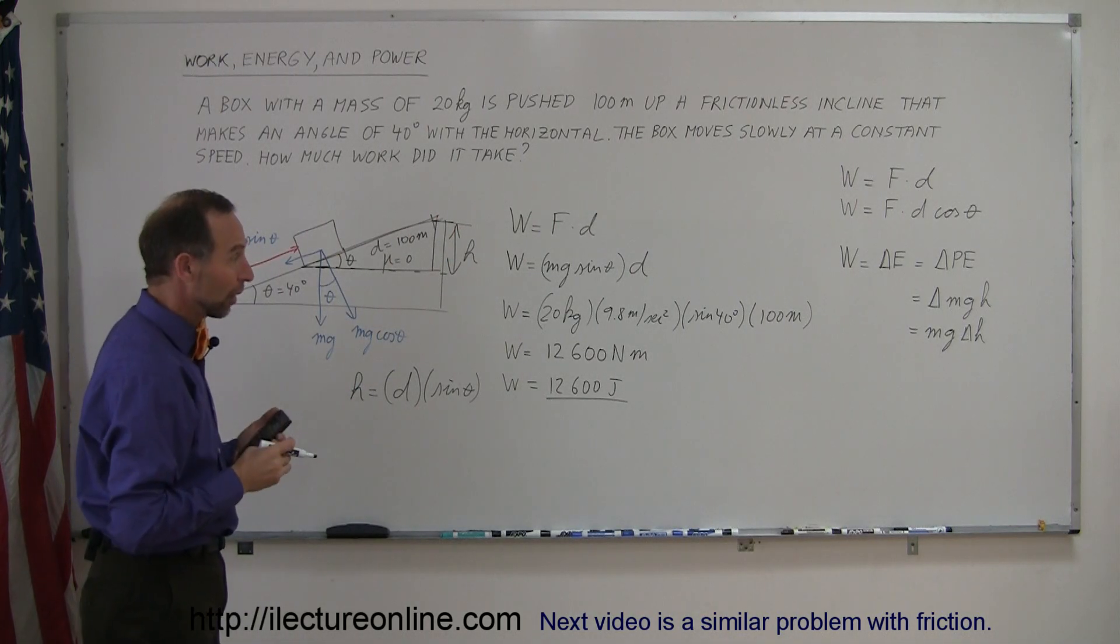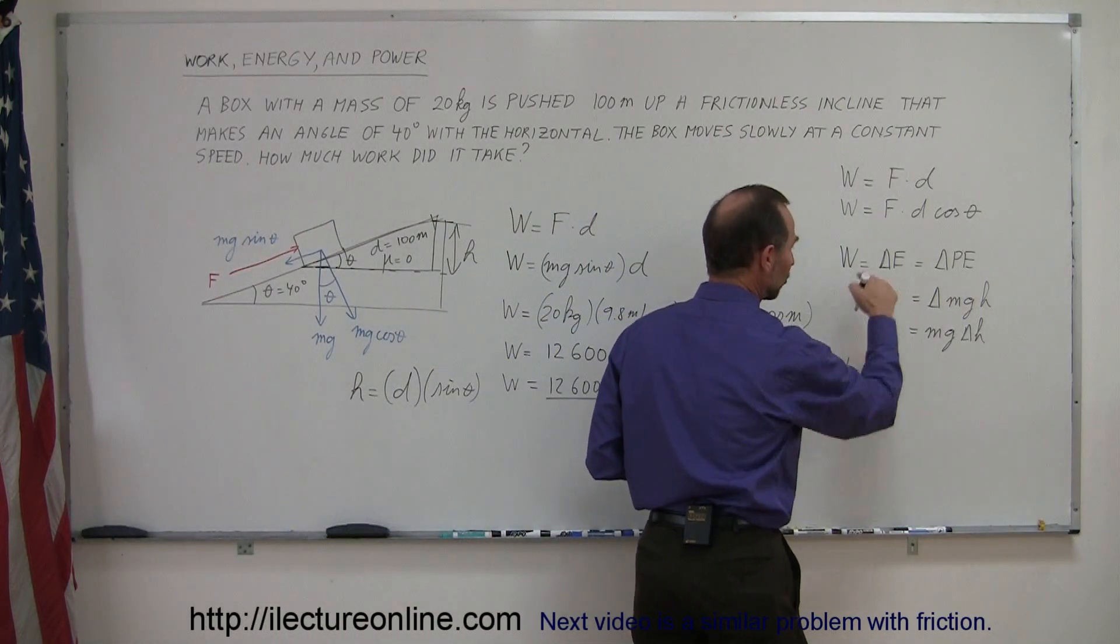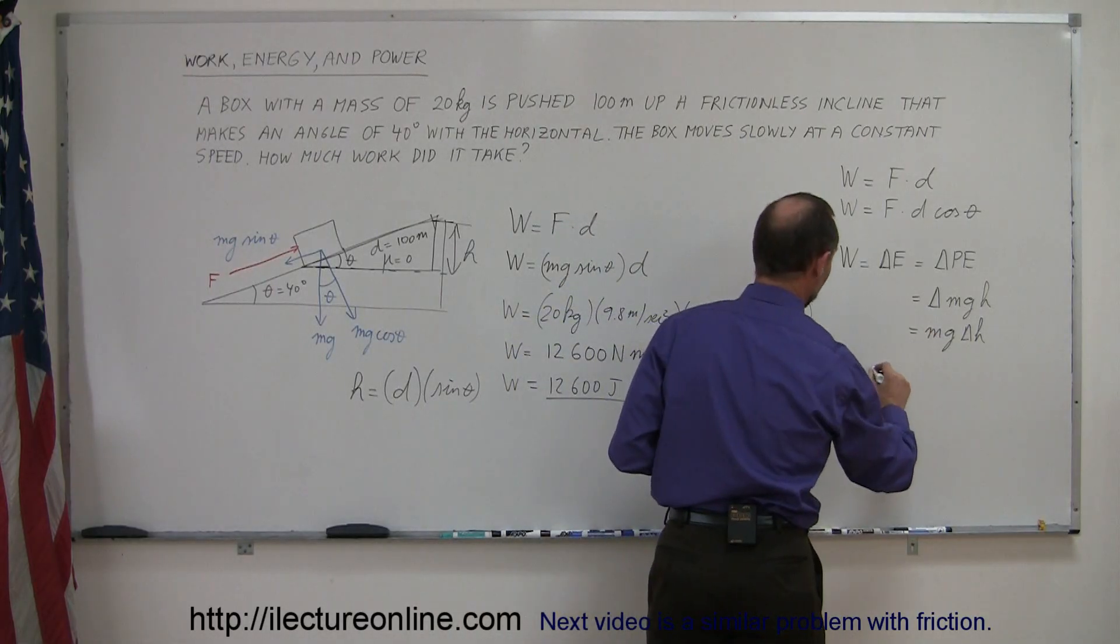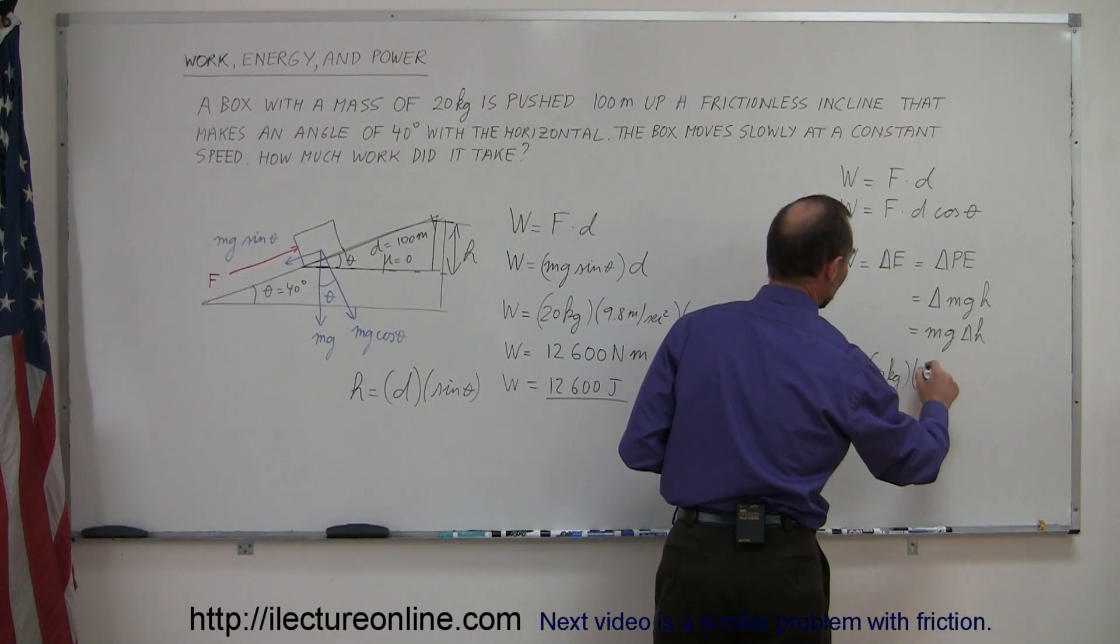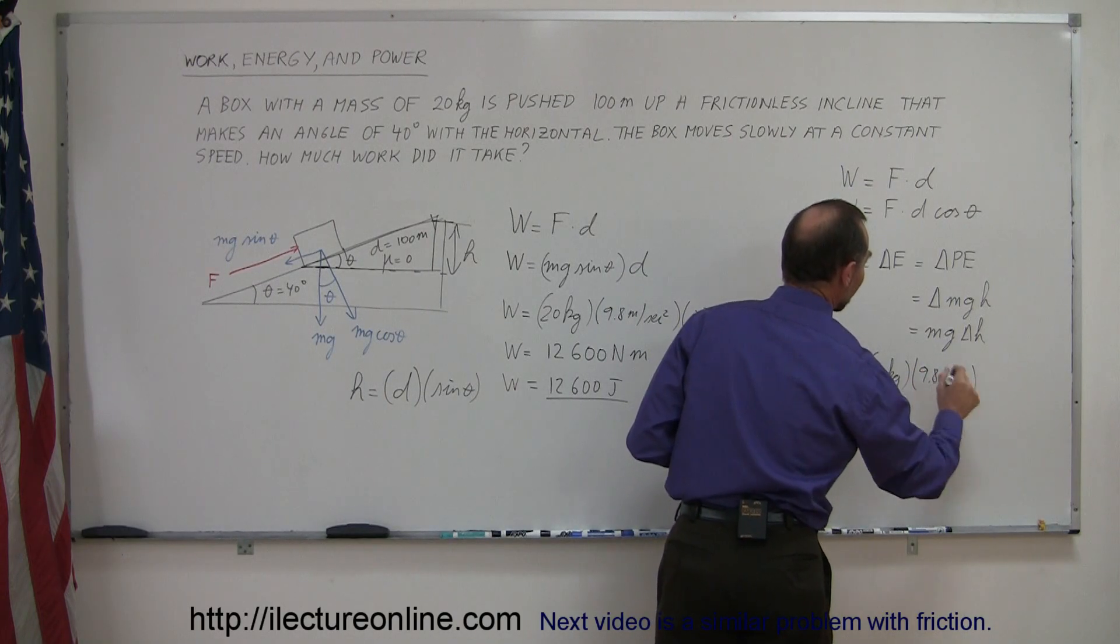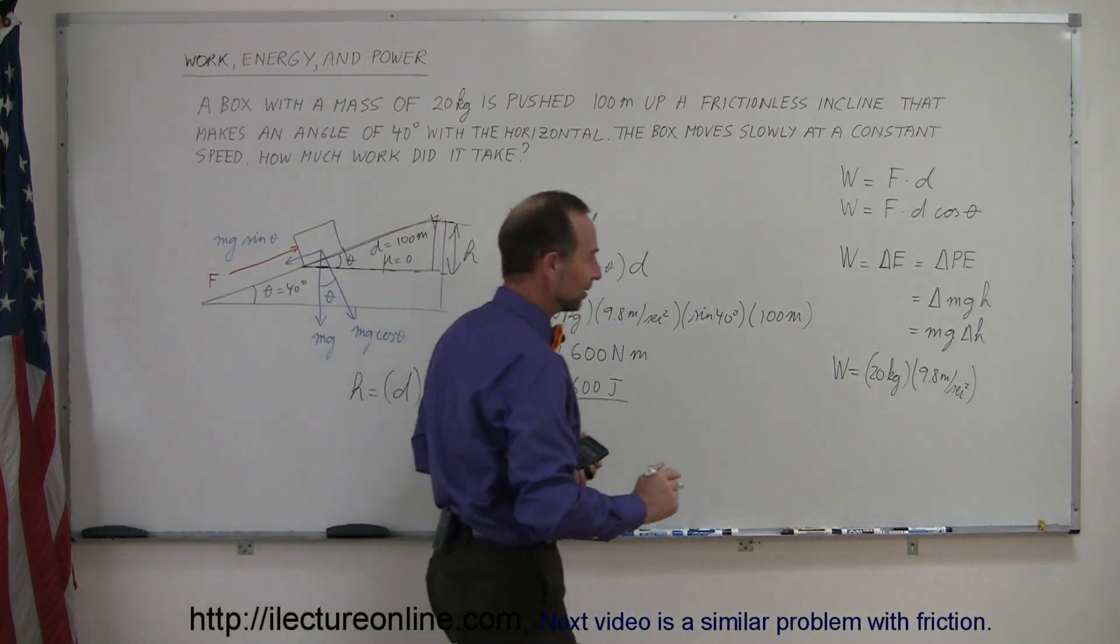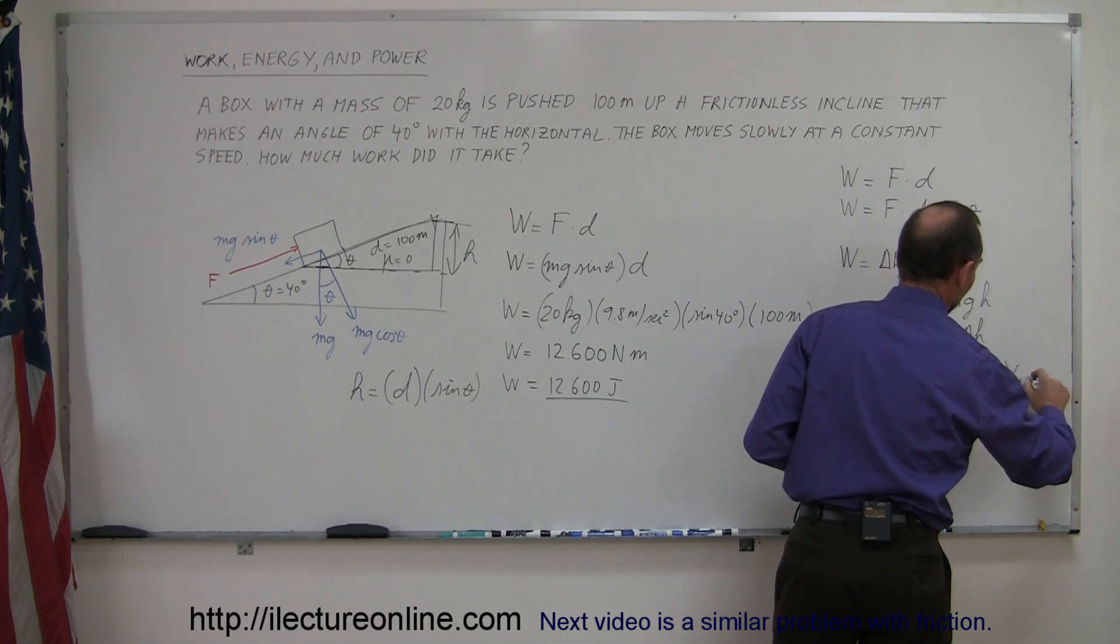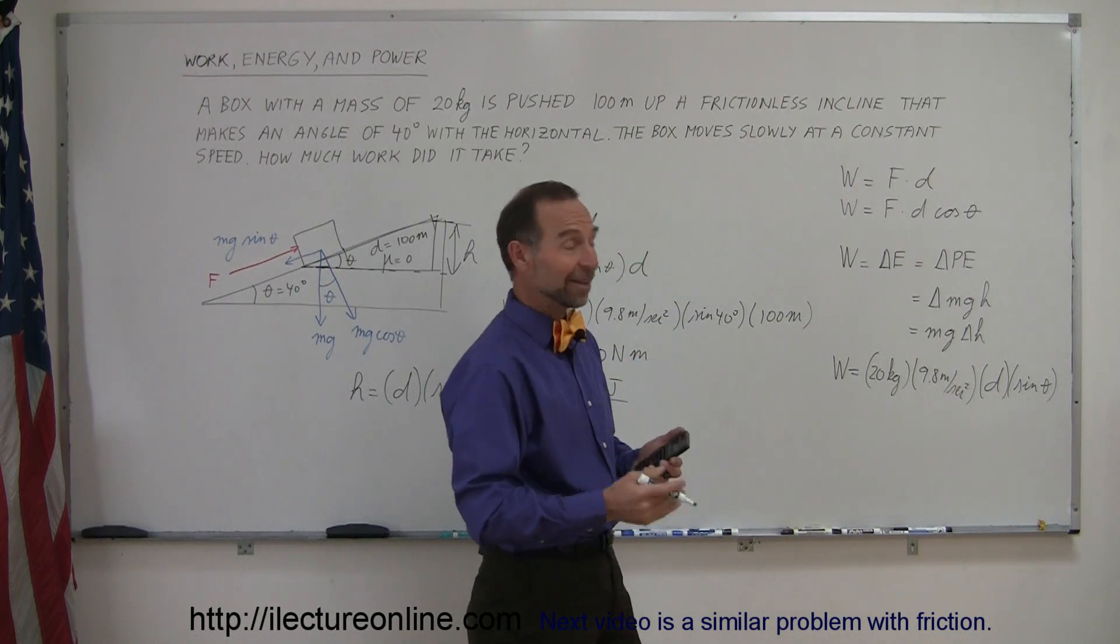Plugging that into our equation, we can now say that the work done, which equals the change in energy or change in potential energy, equals the mass of the object, 20 kilograms, times g, which is 9.8 meters per second squared, times the change in the height. The change in the height is the displacement times the sine of theta. So the displacement times the sine of theta, and if we plug in those numbers, you end up with the exact same equation.